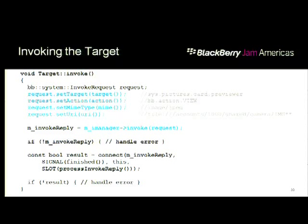Invoking a card is really easy and only takes about five lines of code. You specify the target — on dev alphas the picture card previewer is sys.pictures.card.previewer. The action is 'view'; you can also have 'edit' if someone develops a picture editor target. You specify the MIME type — in this case JPEGs — and the URI pointing to the file under shared/camera. Then you call invoke with your request, and it invokes the card. Invocation is a powerful framework that doesn't take many lines of code.